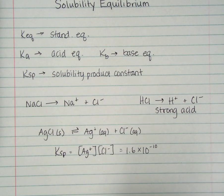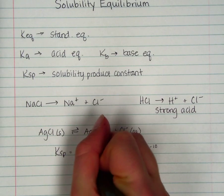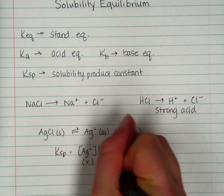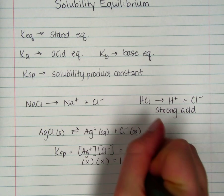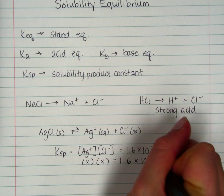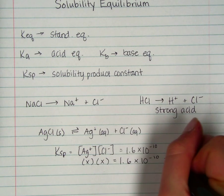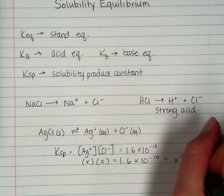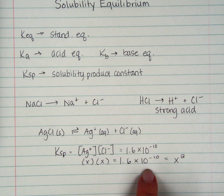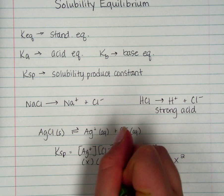So really, if I call Ag+ x, then Cl- is also x. So that is 1.6 times 10 to the negative 10. So now I have that really equals x squared. So 1.6 times 10 to the negative 10 is x squared. So if I take the square root of that, I get 1.26 times 10 to the negative 5 is x.